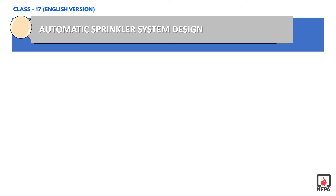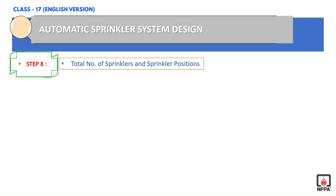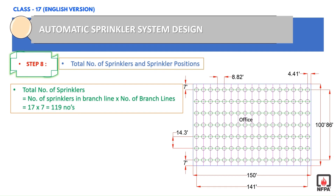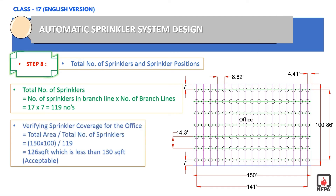Step 8: We calculate the total number of sprinklers and position them. Using the formula shown on screen, we get 119 sprinklers for the whole office area. The sprinklers are placed on the intersection points of the branch lines. We verify the sprinkler coverage by dividing the total area by the number of sprinklers, getting approximately 126 square feet per sprinkler, which is acceptable since it is less than 130 square feet. So our design is acceptable.